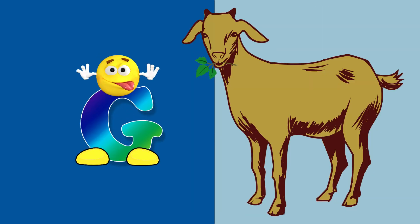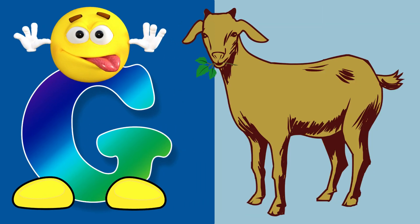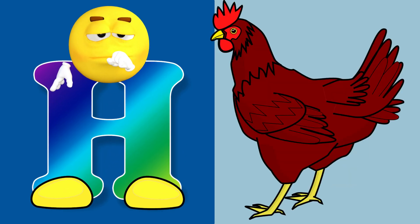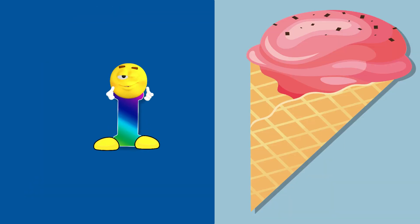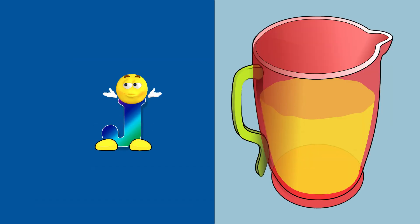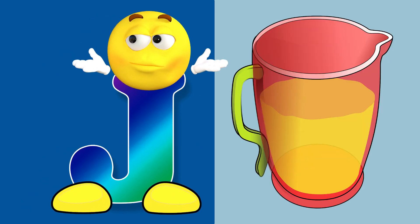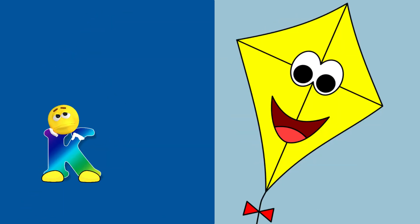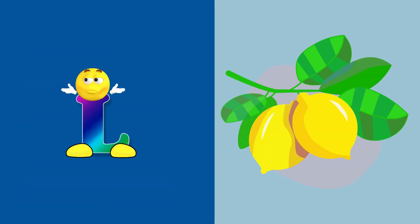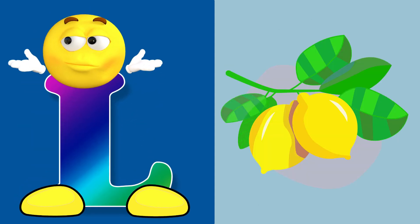G for goat. H for hen. I for ice cream. J for jug. K for kite. L for lemon.